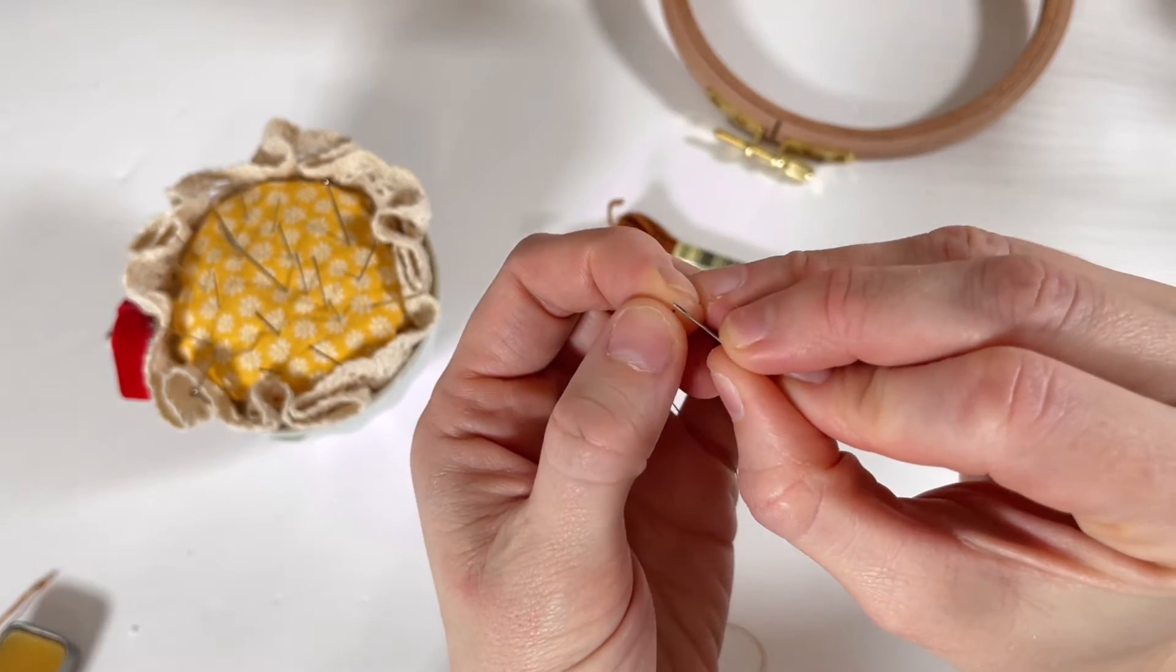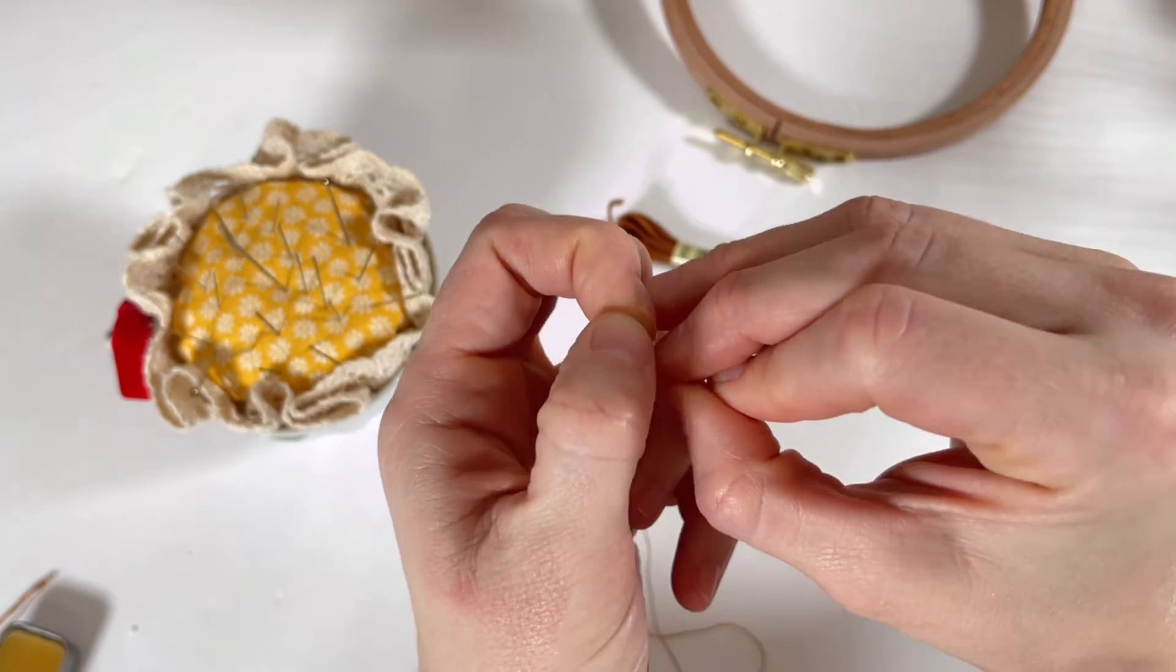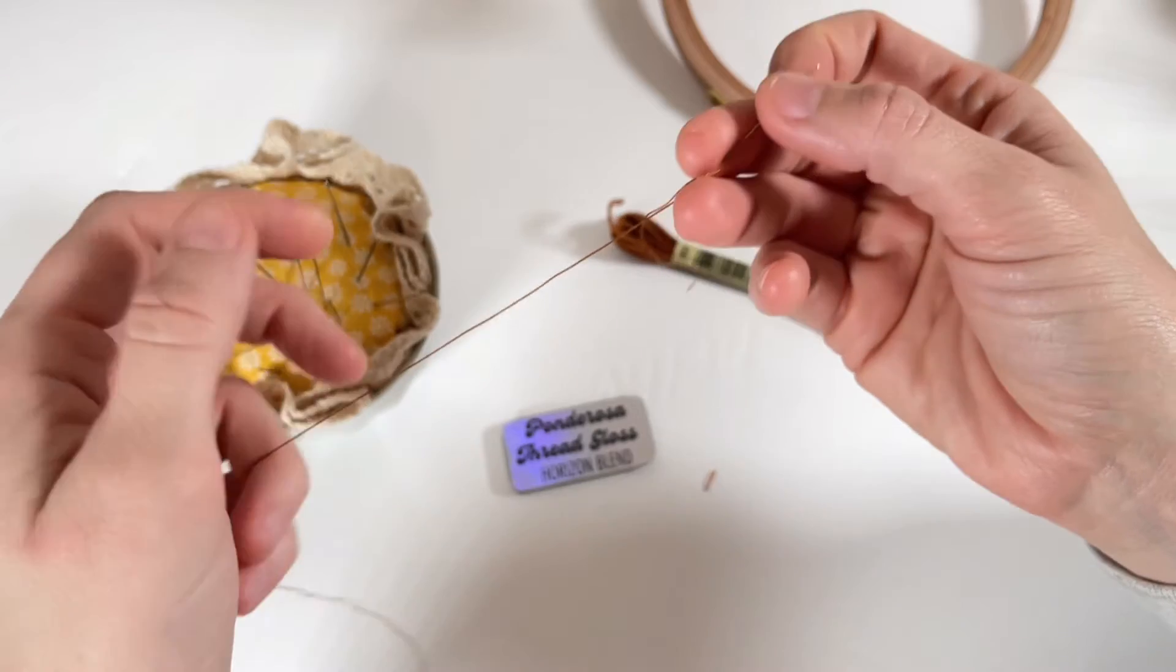Pinch the very end of the thread between your forefinger and thumb, and then gently place the eye of the needle right on top of it and pull through.